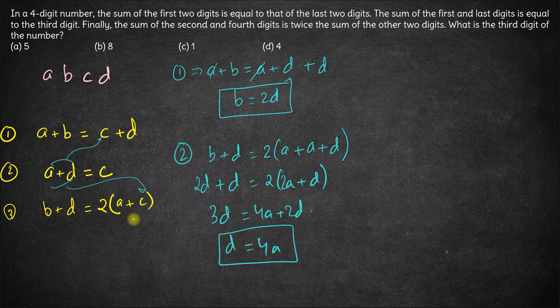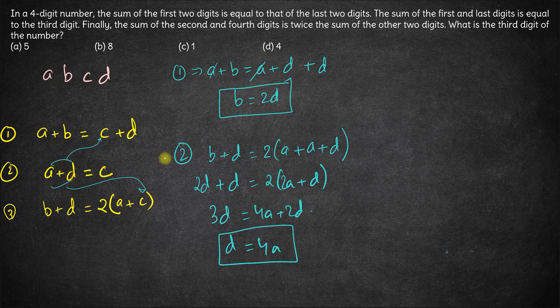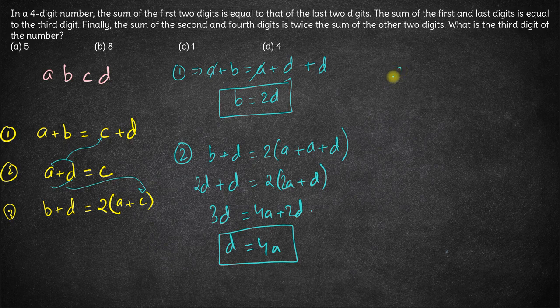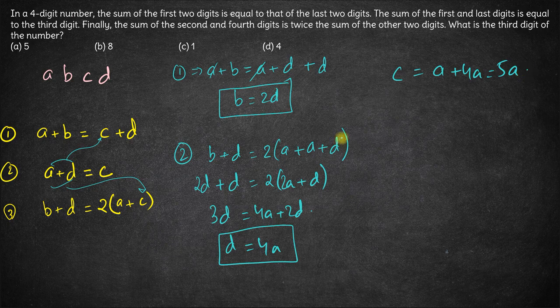And now finally putting D equal to 4A over here, we get C is equal to A plus 4A which is 5A. So C is equal to 5A.